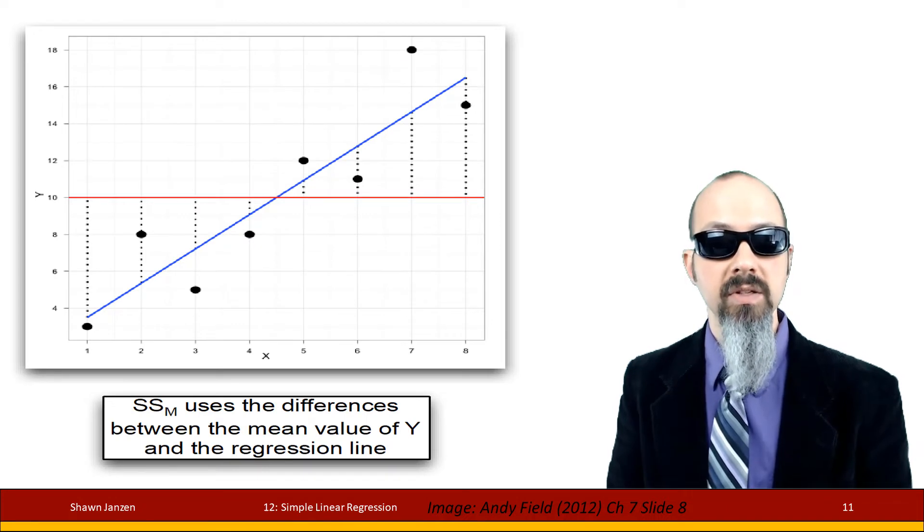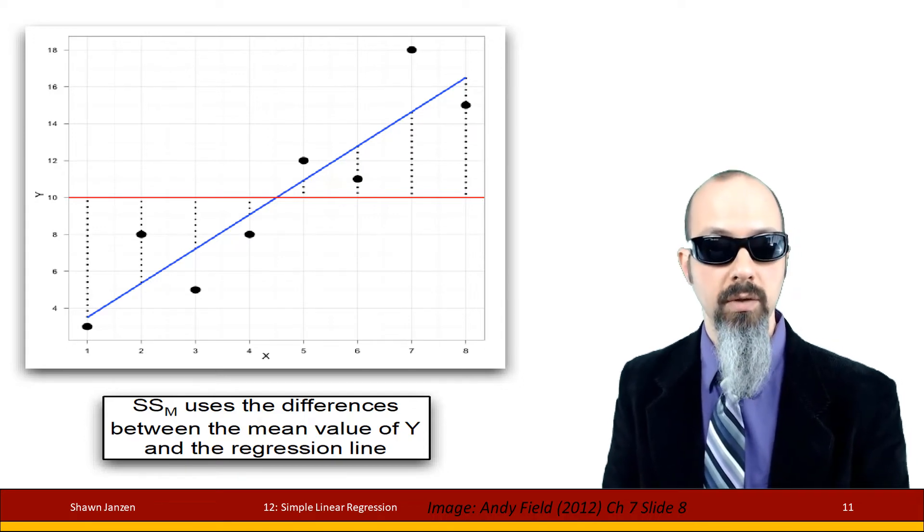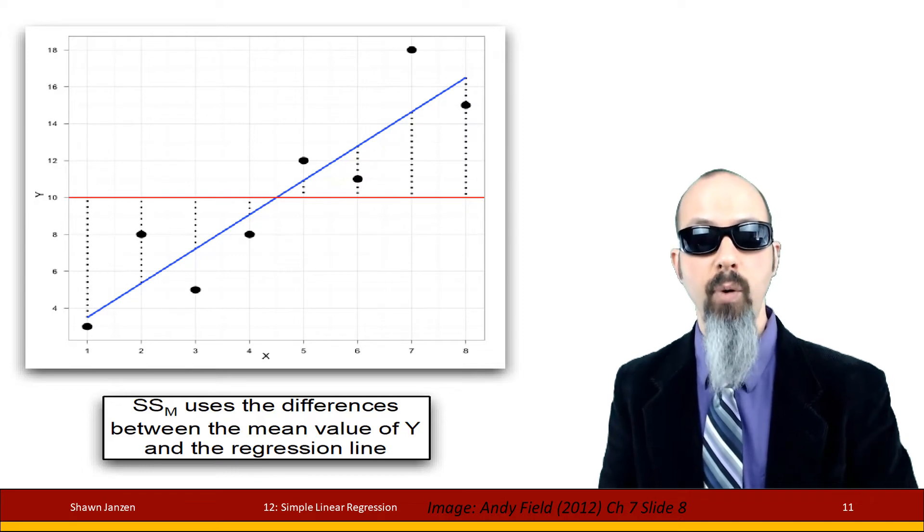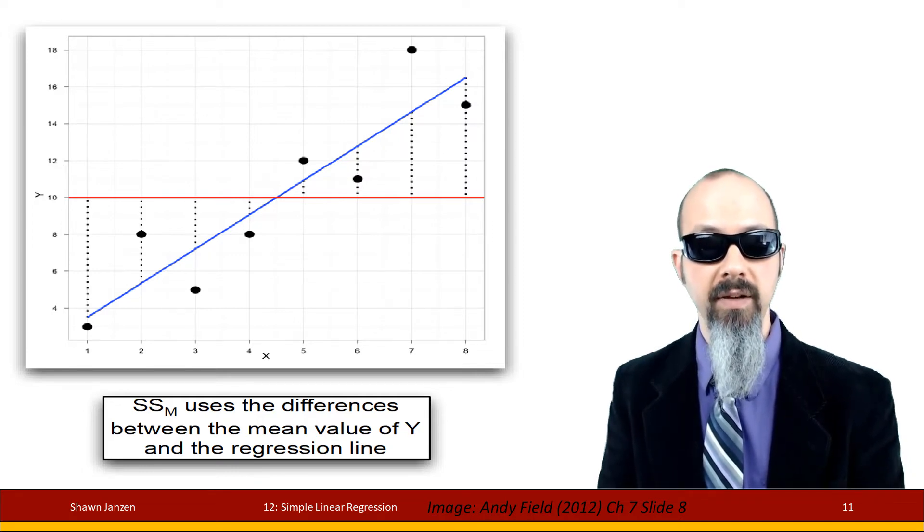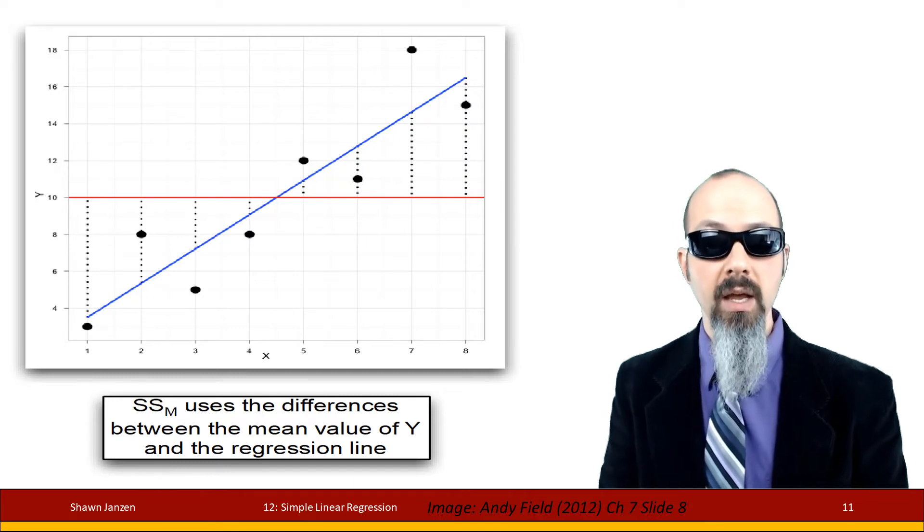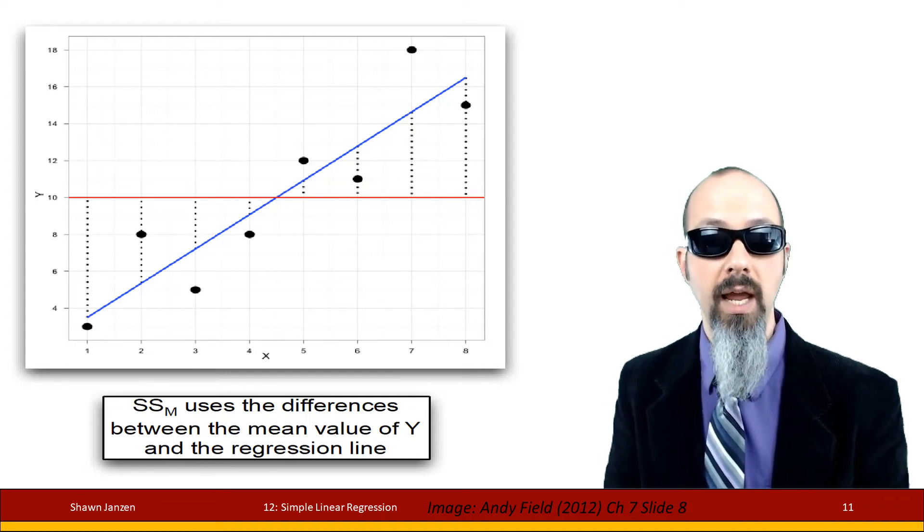The third point, the sums of squares for the model—the stuff that we can explain—is going to be the distance from your regression line to the mean of the predictor variable. So the first one, total, was points to mean line of the DV. The error was plot points to the regression line. And then the model was regression line to the mean of the DV. That's taking into account how much variation you're able to explain.